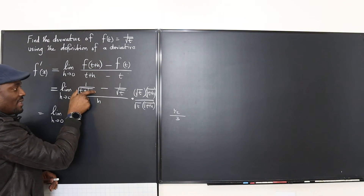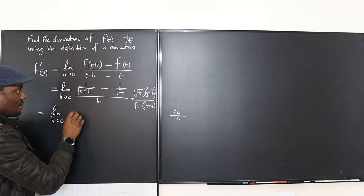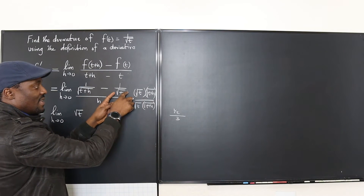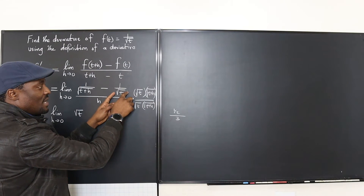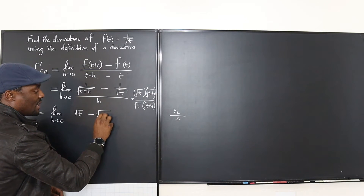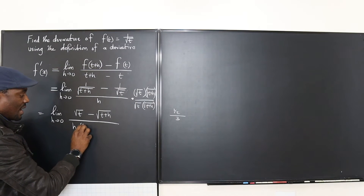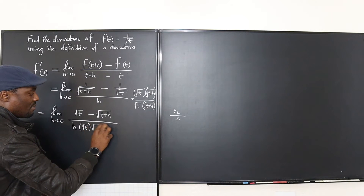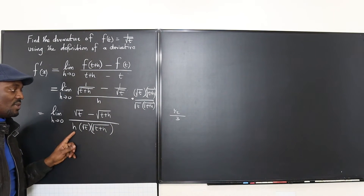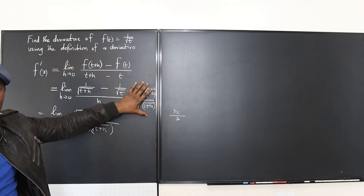If you use this to multiply the first term, it cancels and what you have left is just rad t. If you use this to multiply the second term, it cancels and you have minus square root of t plus h. Under, you're going to have h multiplied by square root of t multiplied by square root of t plus h. Do not distribute this — that's your simplified function.